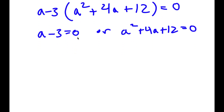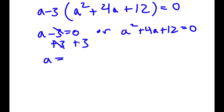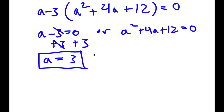For a minus 3 equals 0, I simply add 3 on both sides. These cancel out and I get a is equal to 3. So this is one solution of a.